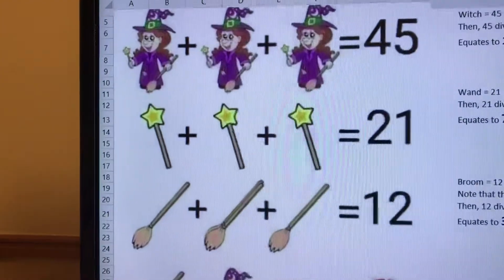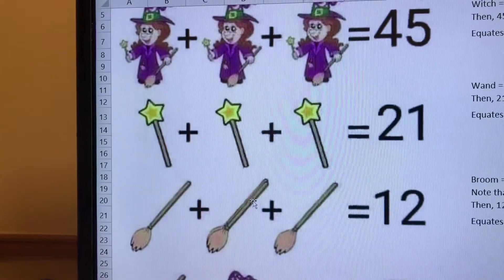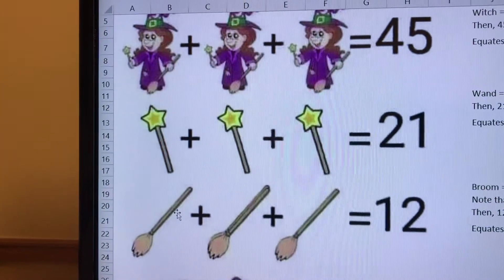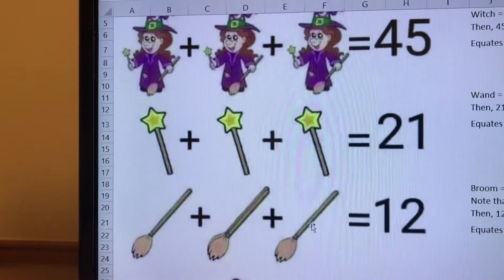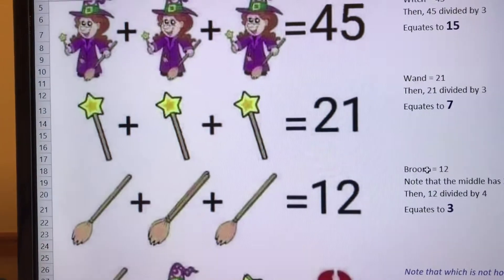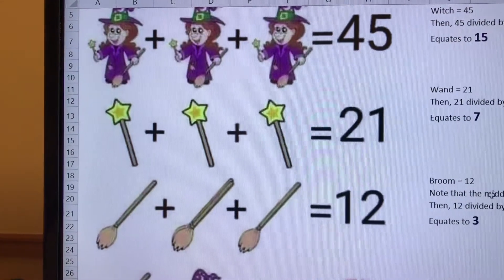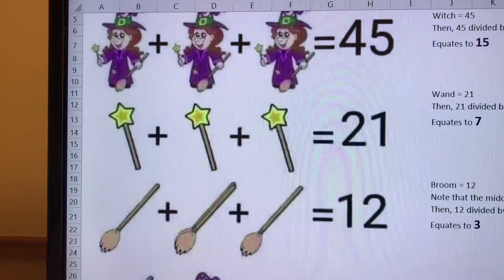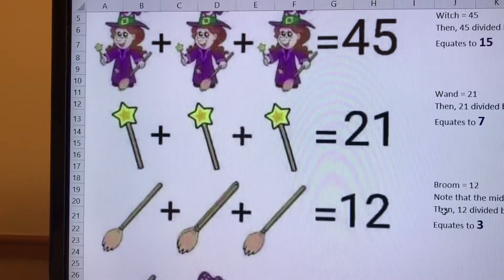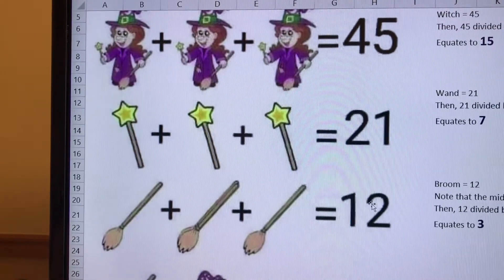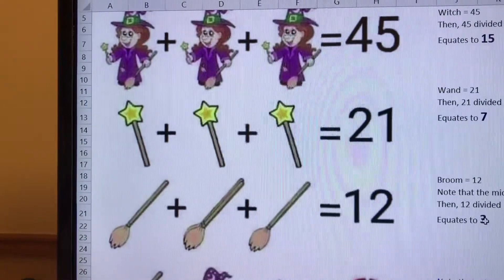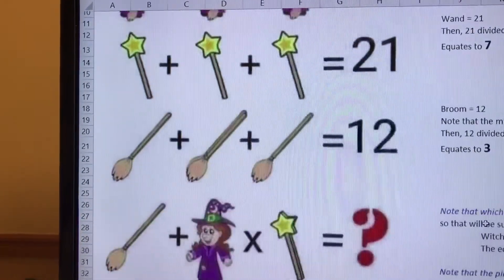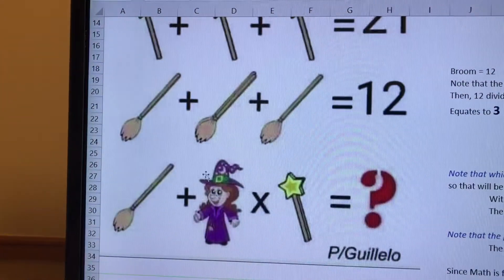So that means there's one, two, three, four - four broomsticks. So the broomsticks equal 12, and the middle has two brooms. So what I did is 12 total divided by 4, so each broomstick is equal to 3.